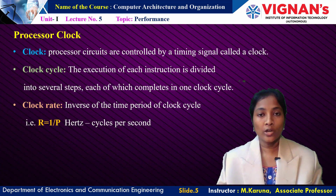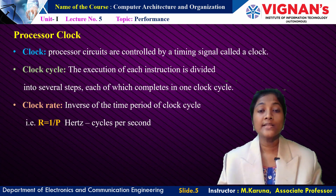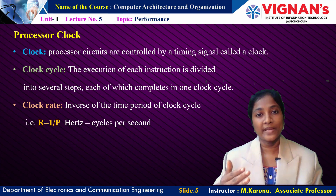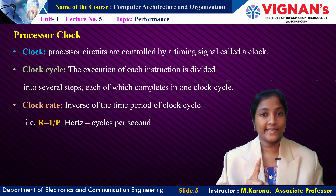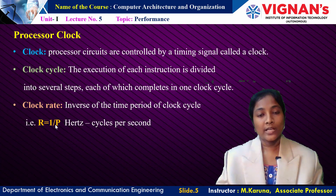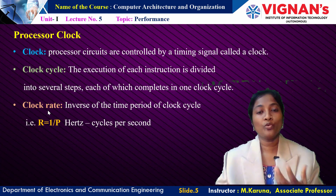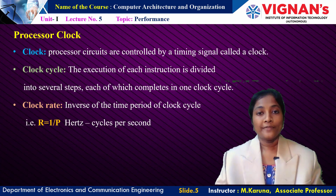Coming to the processor clock: all processor circuits are controlled by a timing signal known as the control signal generated by the clock. Whenever the processor performs an instruction, it divides that instruction into a sequence of basic steps. Each basic step requires one clock cycle to execute. Let P be the time duration of the clock cycle, or machine cycle. The inverse of P is the clock rate. Clock rate can be increased to achieve better performance by reducing the time period of the clock cycle.